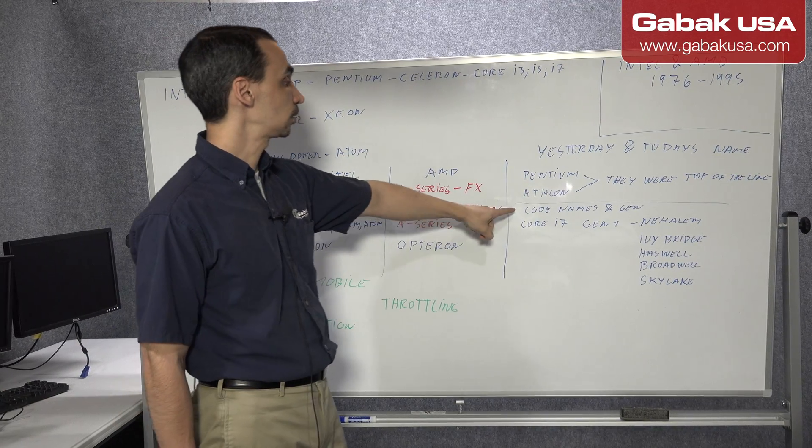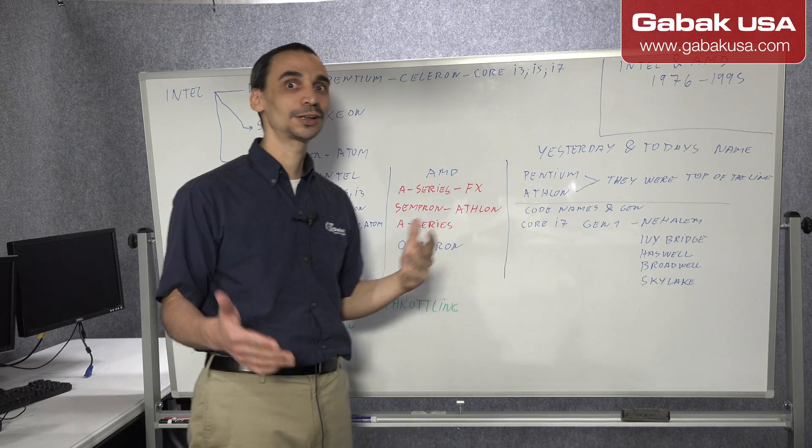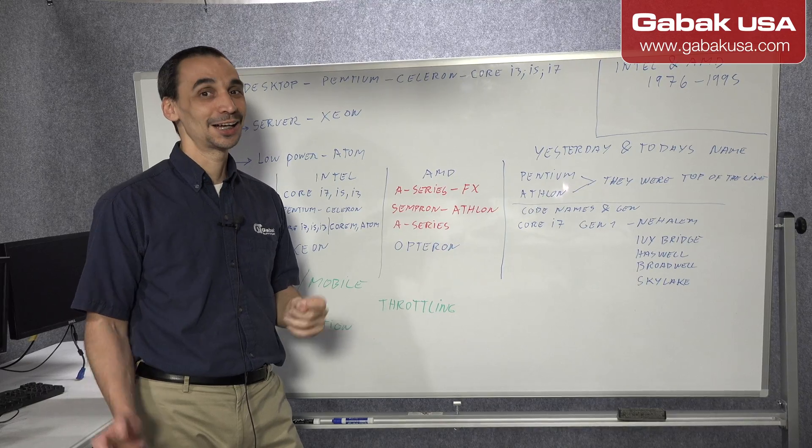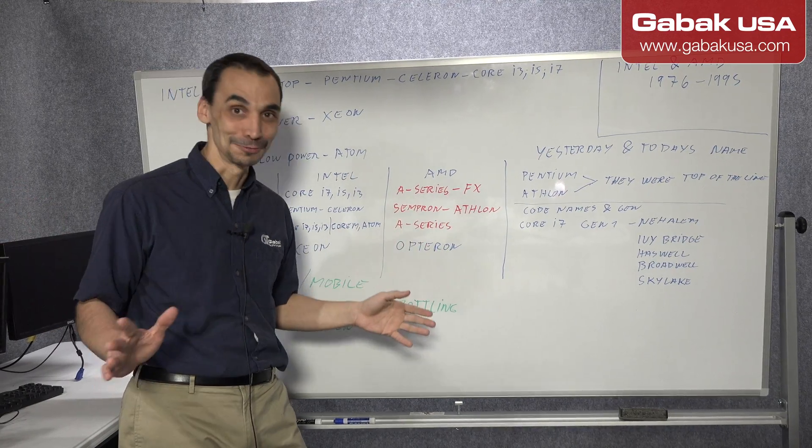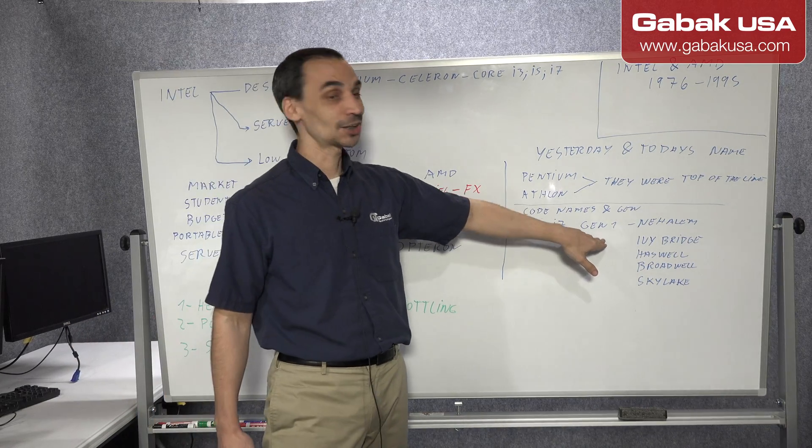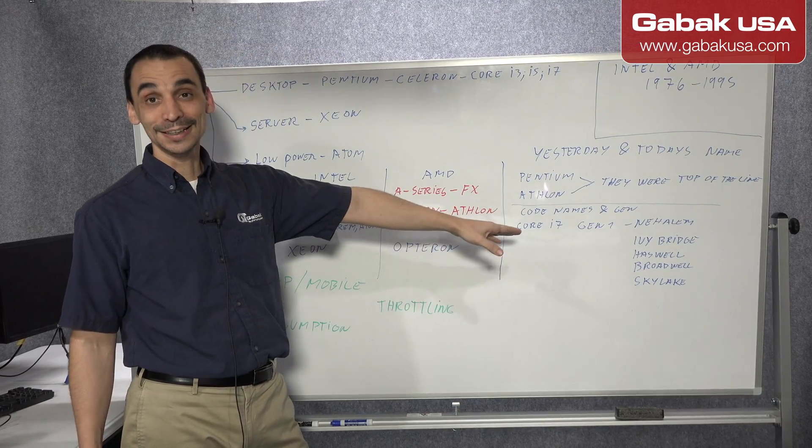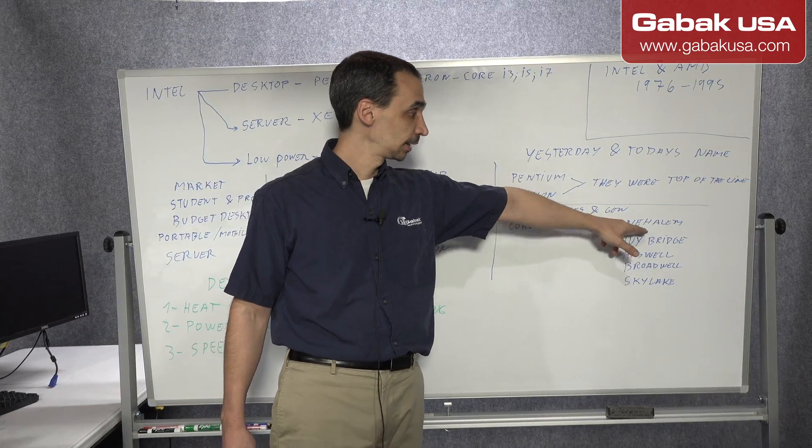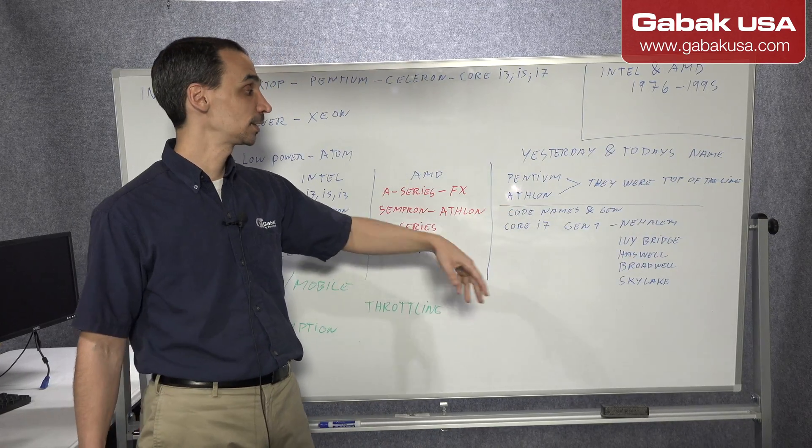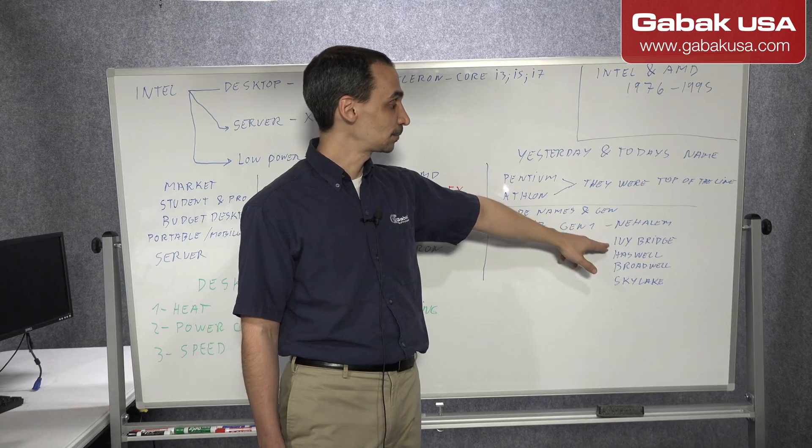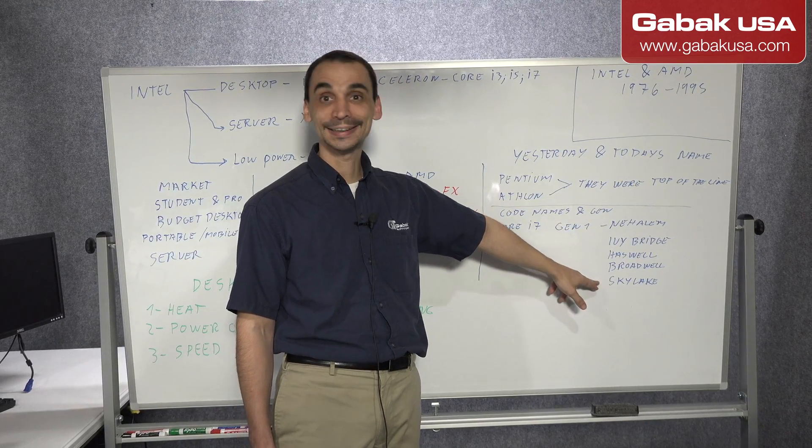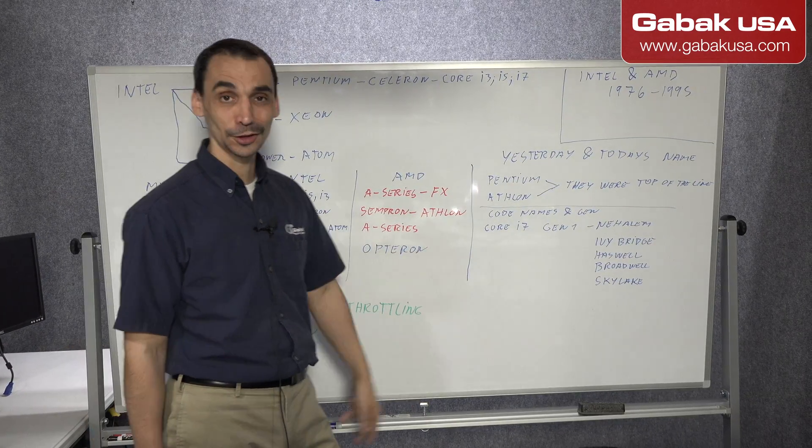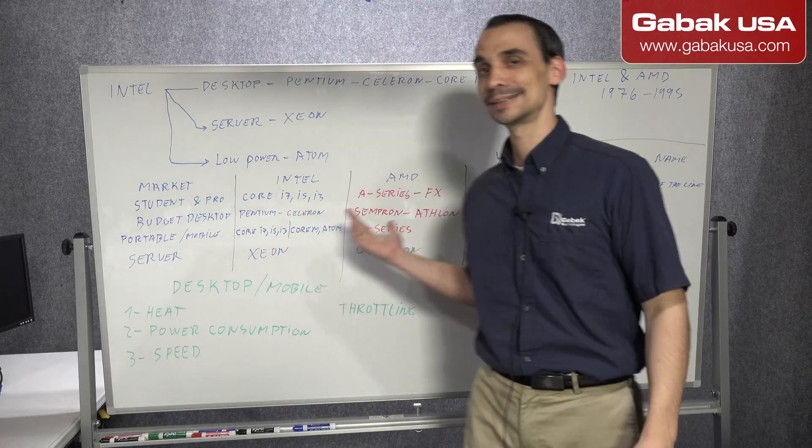So here we have the code names and generation, because when you start talking with someone and you say, yeah, my processor is Core i7. Oh, really? And if you think that's it, you're doomed. So what you have to know is the generation, because Core i7 started around 2008. So you have the first chain is called Nehalem. So that is the first one. And then you have many other ones, like Ivy Bridge, Haswell, Broadwell. And then Skylake is one of the latest ones in 2016. And I know that there is another coming or there is another one already. But that is the idea.